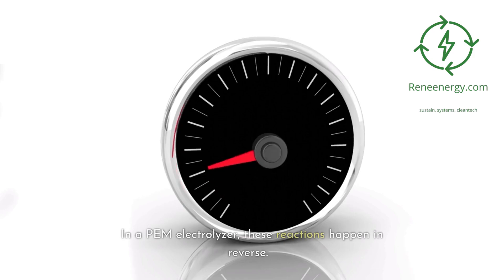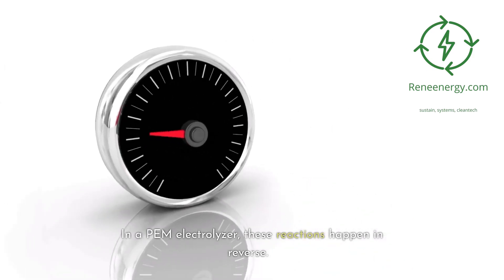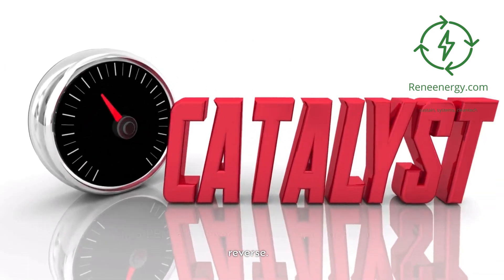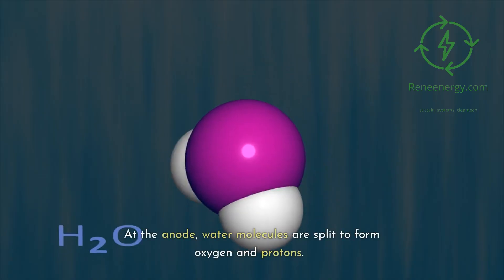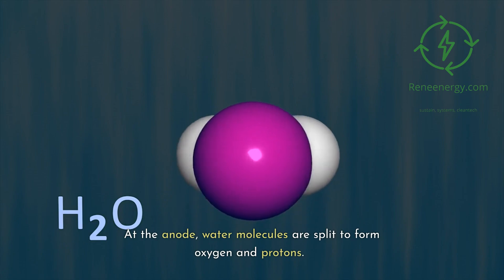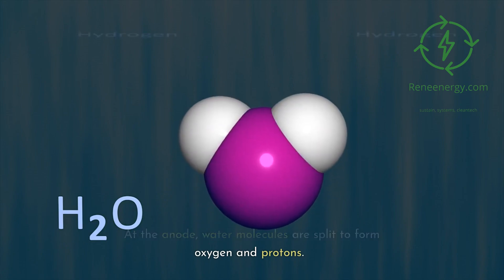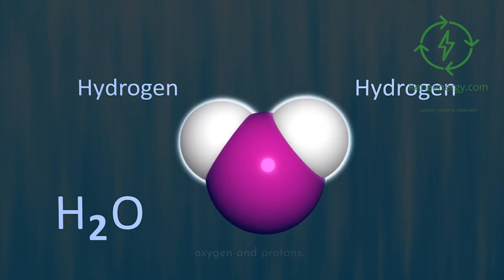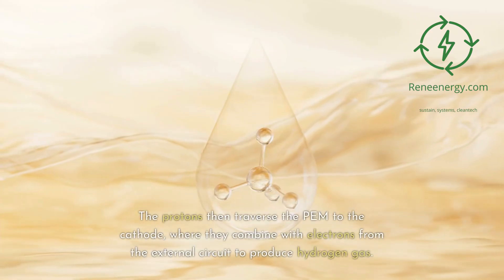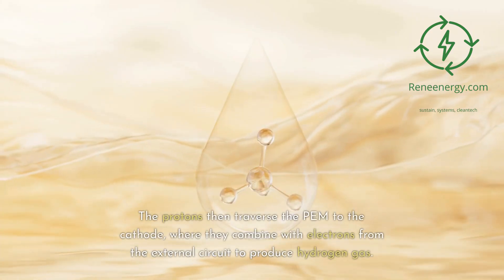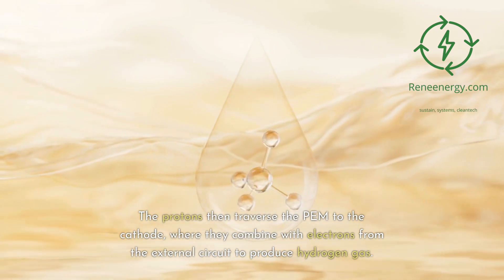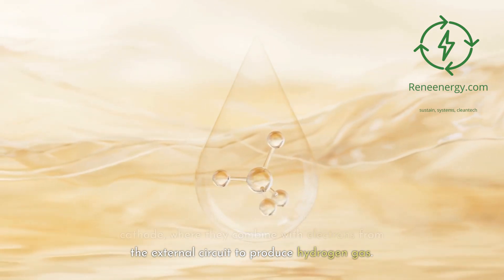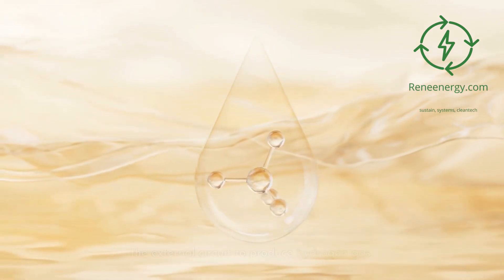In a PEM electrolyzer, these reactions happen in reverse. At the anode, water molecules are split to form oxygen and protons. The protons then traverse the PEM to the cathode, where they combine with electrons from the external circuit to produce hydrogen gas.